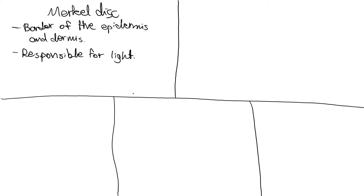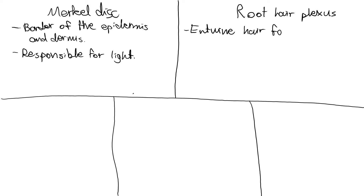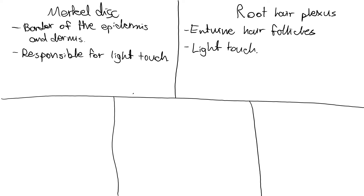The next aspect I want to talk about is a root hair plexus. The location of these is pretty self-explanatory — these root hair plexuses entwine or wrap around the hair follicles. They are also responsible for light touch. You may be wondering why both the Merkel disks and root hair plexuses are responsible for light touch — essentially they allow for varying dimensions of sensation to be taken in within the body.